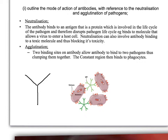Once pathogens are clumped together by agglutination, a phagocyte comes along, recognises the constant region, and then engulfs the clumped-together pathogens. Here we have bacteria which have been clumped together by antibodies, and the constant regions of these antibodies would then be recognised by phagocytes which engulf this collection of pathogens. That's agglutination.